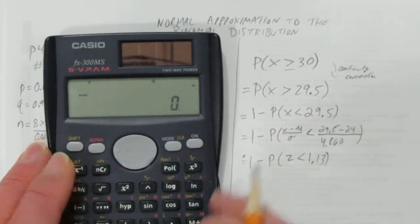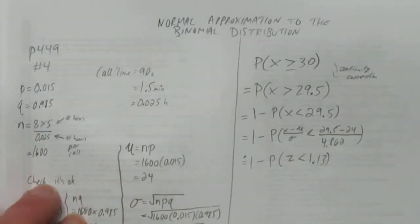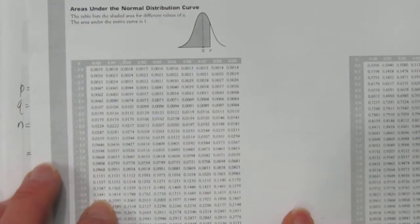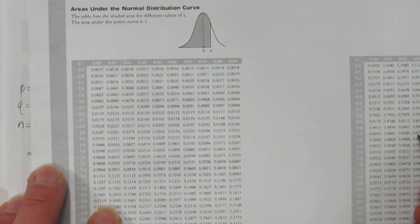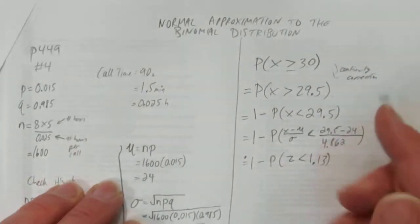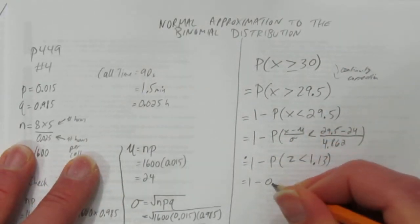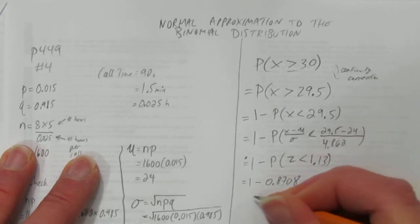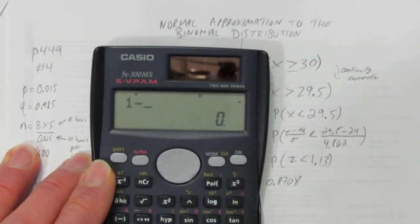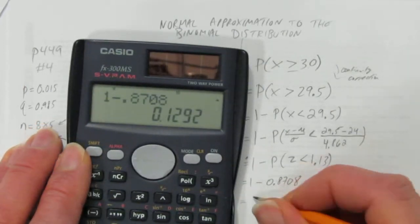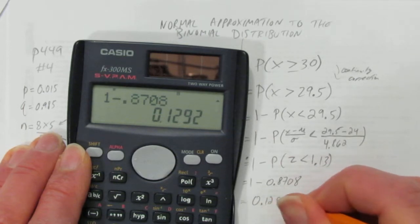We need two decimals for the z-score, 1.13. We rounded this 1.13. We're almost there. We've got to look up a z-score of less than 1.13. So 1.1 over to the 3 column, and you get 0.8708. So this is 1 minus 0.8708. Take it away from 1 minus 0.8708 and you get 0.1292.